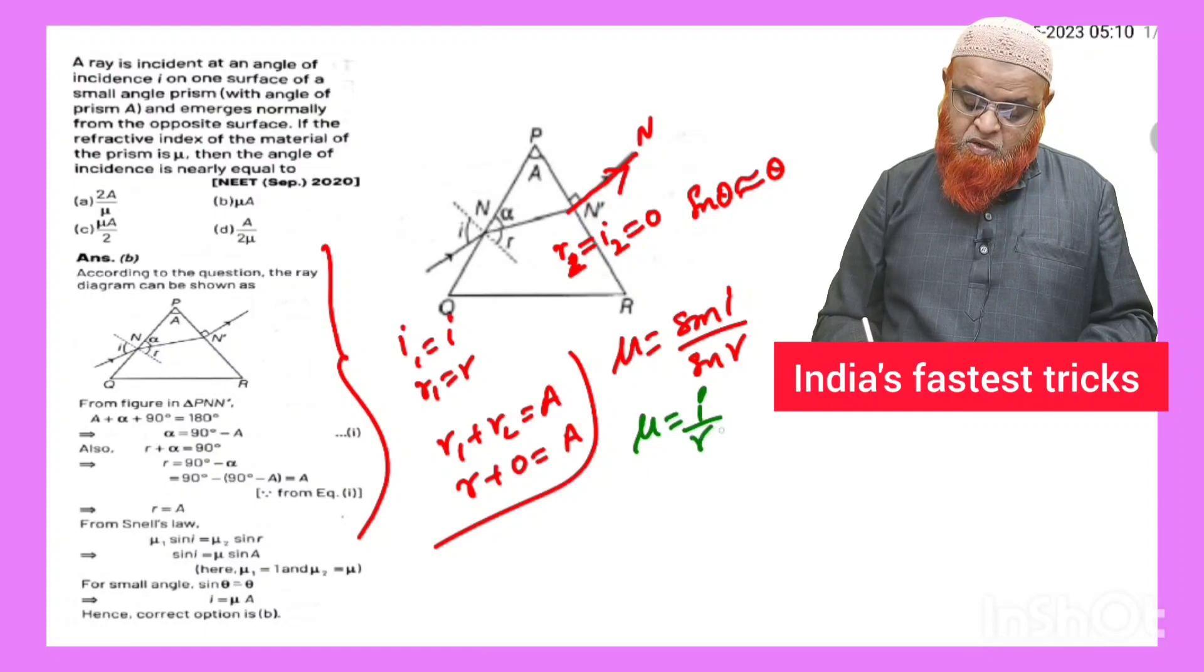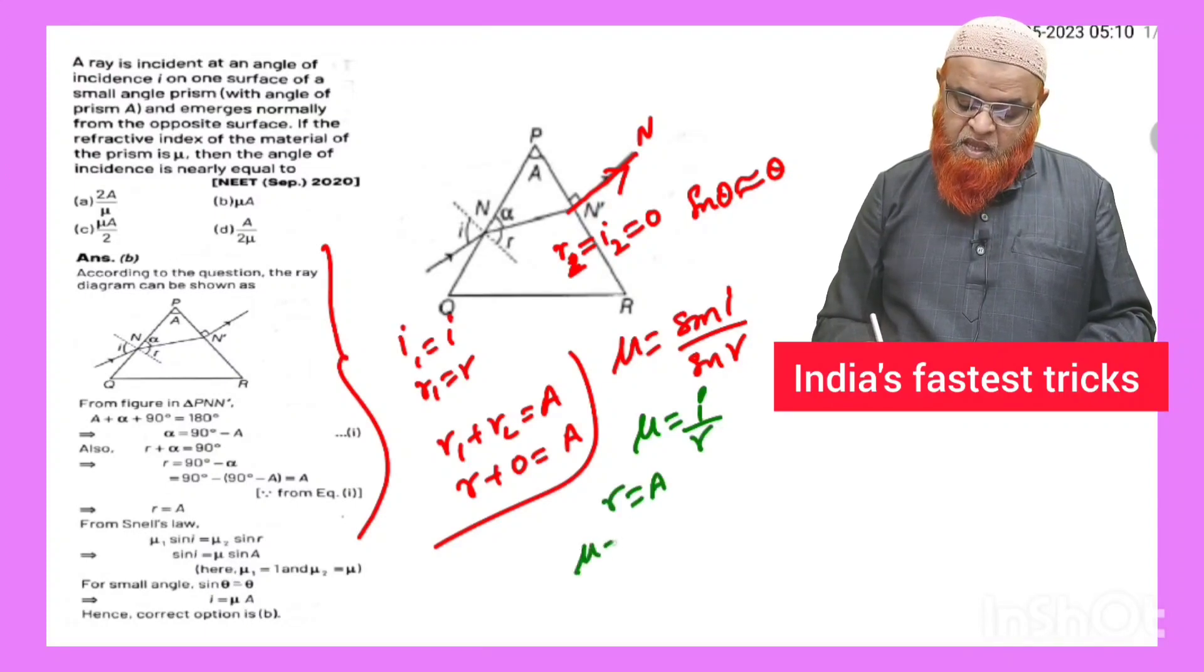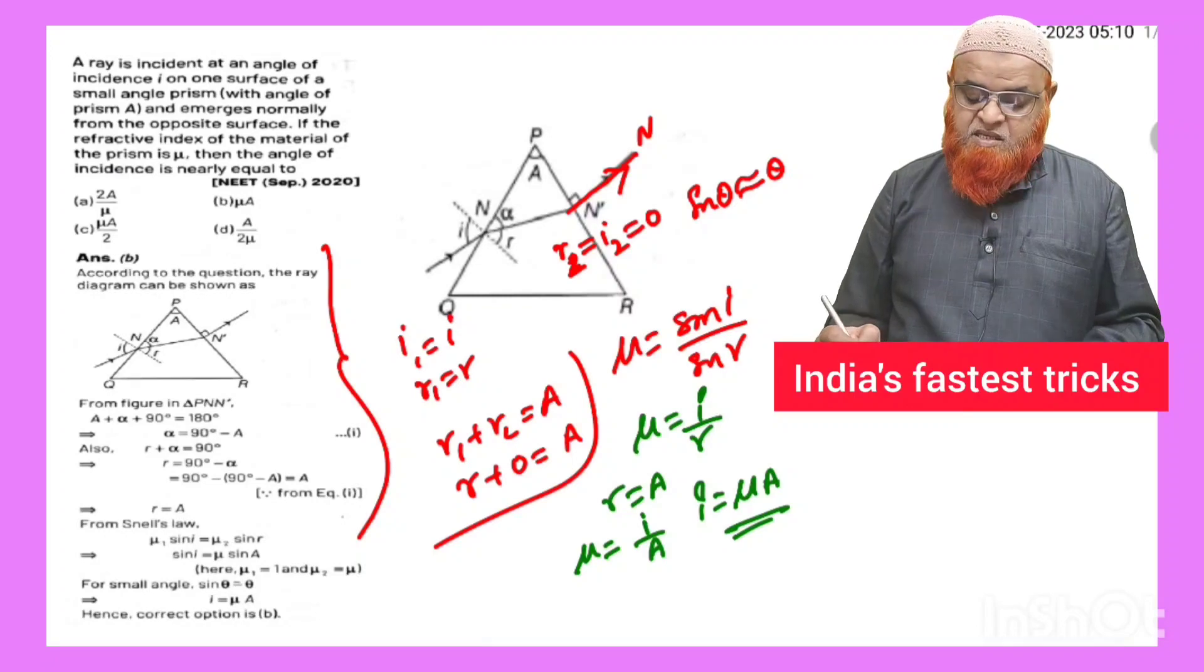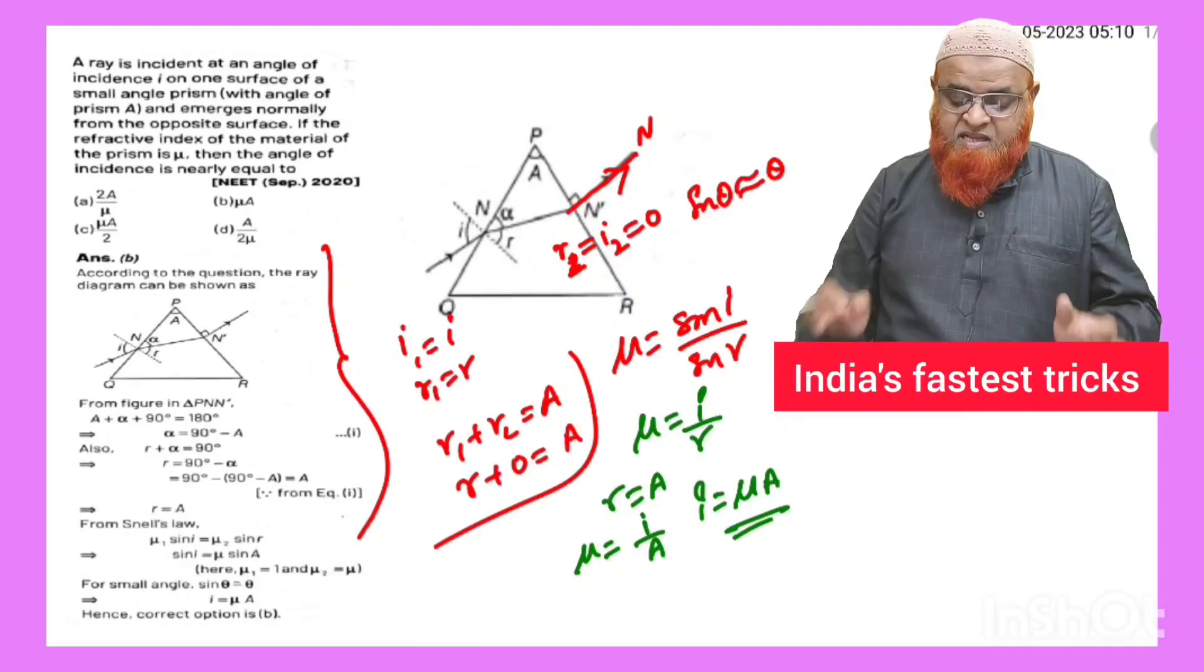But we have proved that r equals a, therefore mu is equal to i by a. So i is equal to mu into a - this is a simple short method to solve the problem.